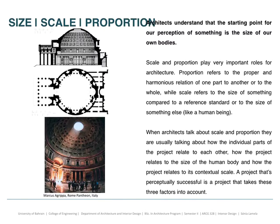Size, scale, and proportion are essential points for architects to understand, because this is the bridge between the three dimensions of our projects and the users. It's about understanding the proportion between a human being and the buildings and spaces we are creating. Architects understand that the starting point for our perception of something is the size of our own bodies. Different architects have explored body size — Le Corbusier used the Modulor; before him, Leonardo da Vinci had the Vitruvian man, the most perfect man integrated in a circle and a square. Scale and proportion play a very important role in architecture.